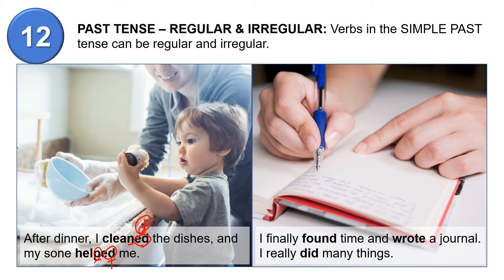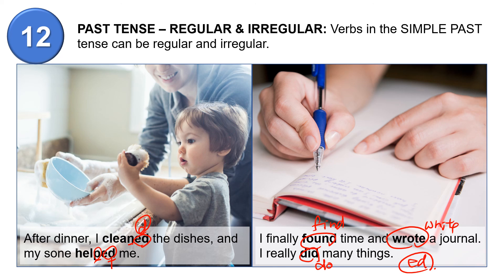'I finally found time and wrote a journal, and I really did many things.' Here are three examples of irregular verbs: 'found' is past of 'find', 'wrote' is past of 'write', and 'did' is the past form of 'do'. I will come back to you with the 'ed' sound as soon as possible. Keep studying English and have a great day. Bye!